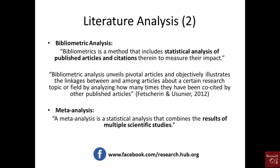Meta-analysis is a statistical analysis that combines the results of multiple scientific studies. In meta-analysis you look only at the findings on the regression coefficients. So in bibliometric analysis you focus on citations, while in meta-analysis you focus on regression coefficients.